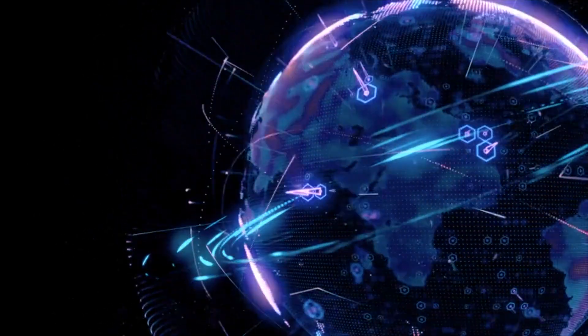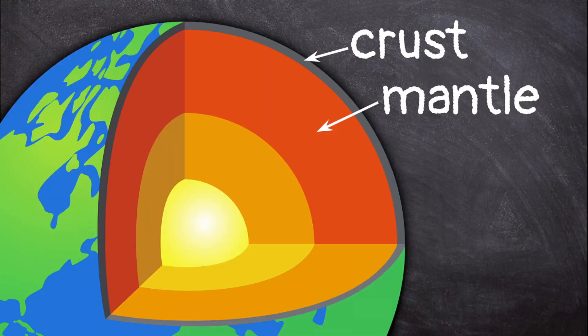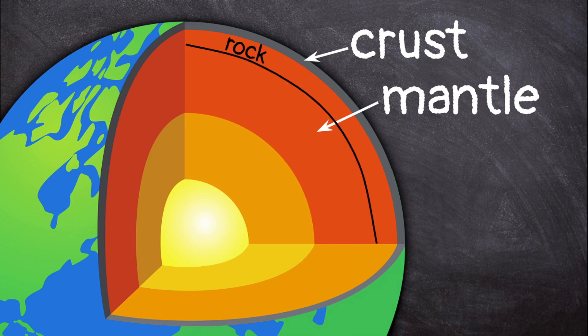The mantle has its own layers. The first layer is solid rock. Next comes a layer of molten or melted rock called magma, and finally another layer of solid rock. After the mantle comes the Earth's core.